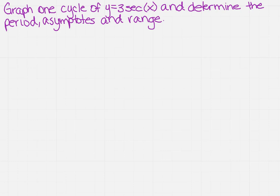We want to graph one cycle of y equals 3 secant x. We also want to determine the period, the asymptotes, and the range for this function. So how are we going to go about doing this?